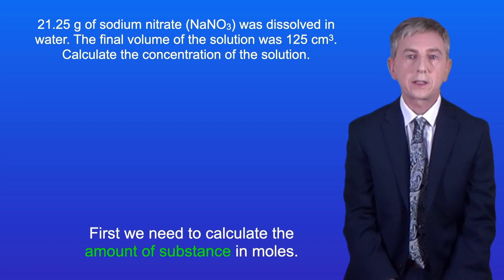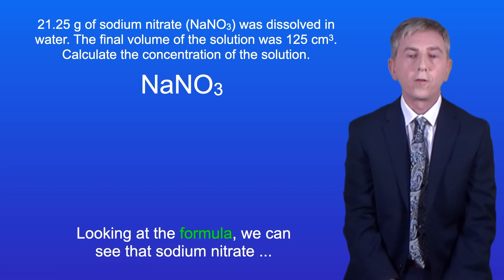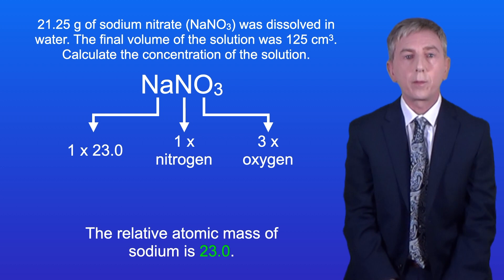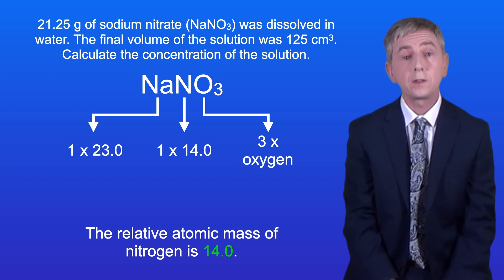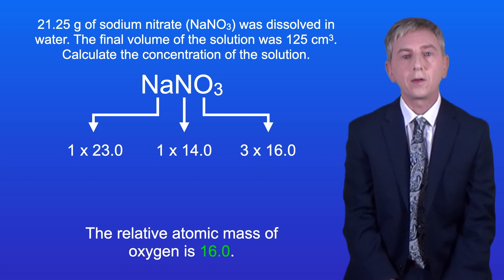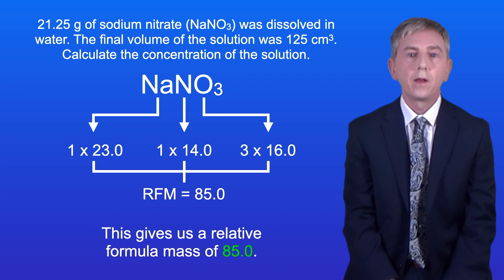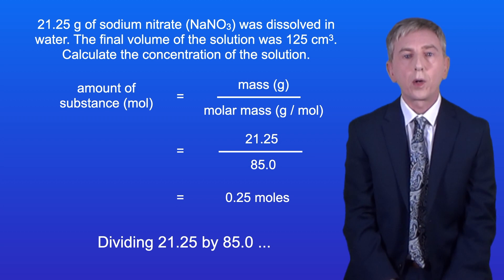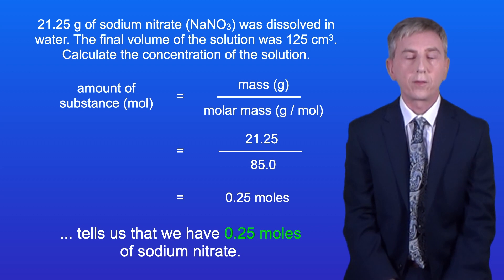Okay, first we need to calculate the amount of substance in moles. Sodium nitrate has one atom of sodium, one atom of nitrogen, and three atoms of oxygen. The relative atomic mass of sodium is 23.0, nitrogen is 14.0, and oxygen is 16.0. This gives us a relative formula mass of 85.0, so the molar mass is 85.0 grams per mole. Dividing 21.25 by 85.0 tells us that we've got 0.25 moles of sodium nitrate.